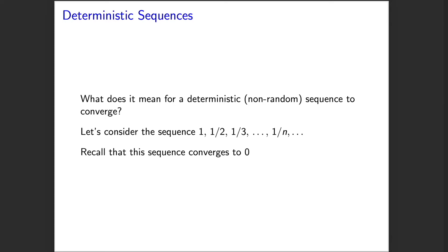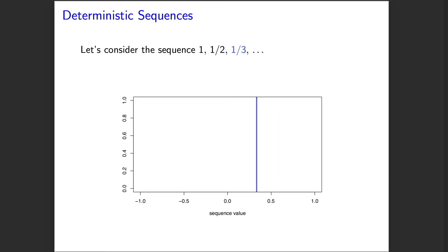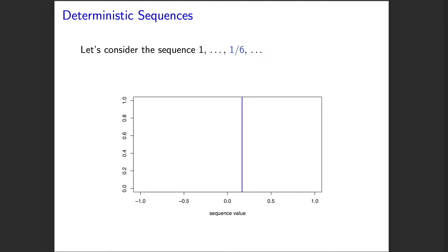What does it mean for a deterministic or non-random sequence to converge intuitively? Let's think about a very simple sequence: one, one-half, one-third, etc. The nth element is one over n, and this sequence converges to zero. Looking at a picture of this, the first element is one, with a vertical bar at one; then one-half, one-third, one-quarter, one-fifth, one-sixth, and so on.